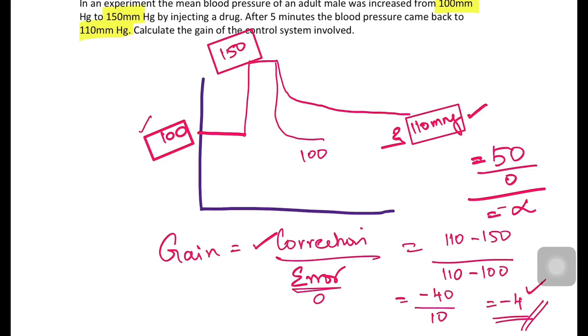In the human body, certain control systems have an infinity-level feedback, meaning the error is absolutely zero. One example is the renal pressure-volume control system, which we will discuss in detail in renal physiology.